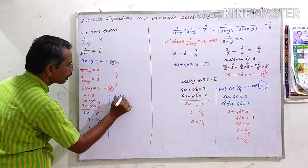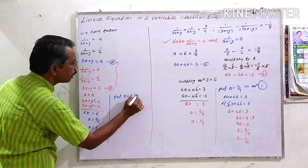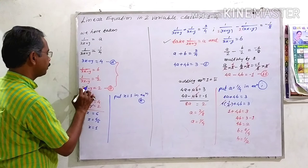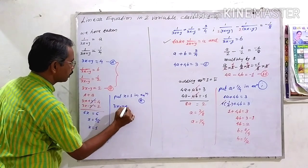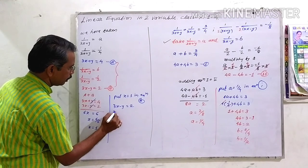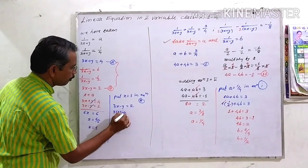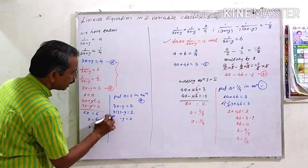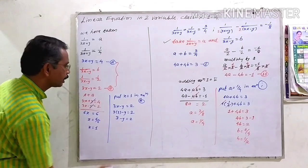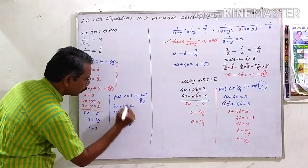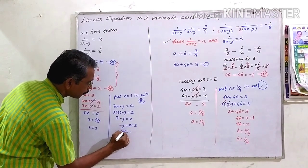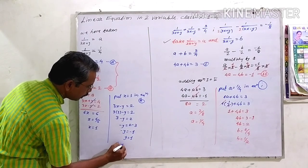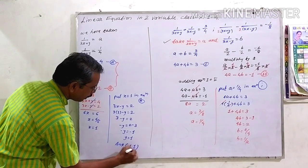Putting x equal to 1 into equation B: 3 times 1 minus y equal to 2, so 3 minus y equal to 2, giving minus y equal to 2 minus 3, hence minus y equal to minus 1, and therefore y equal to 1. Our answer is x equal to 1 and y equal to 1.